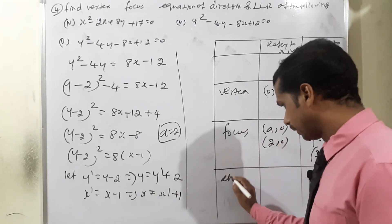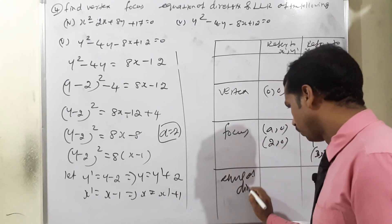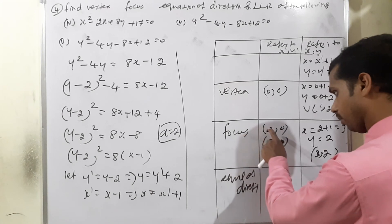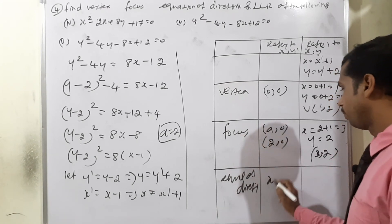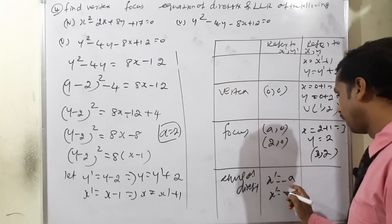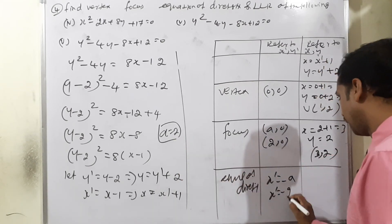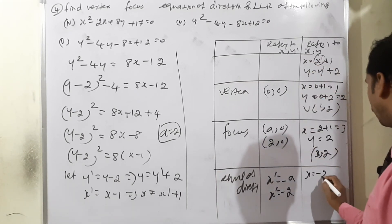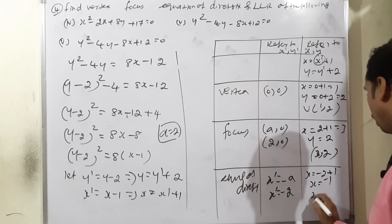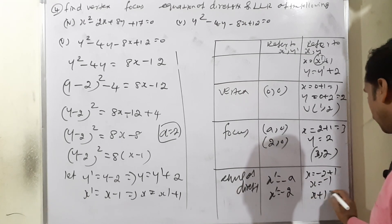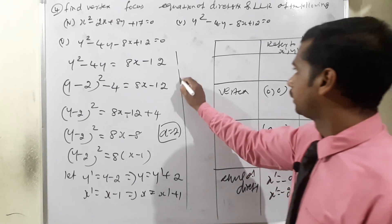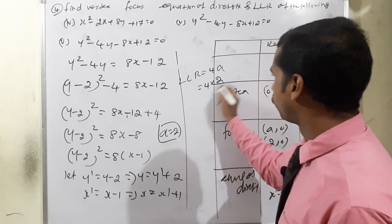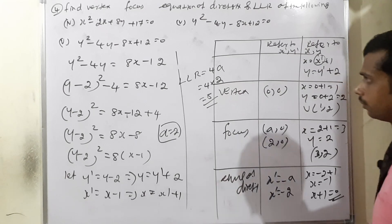Equation of directrix: opposite sign of focus, so x' = -a = -2. Converting: x = -2 + 1 = -1. Therefore x + 1 = 0 is the equation of directrix. Length of latus rectum = 4a = 4 × 2 = 8. Subdivision five is complete.